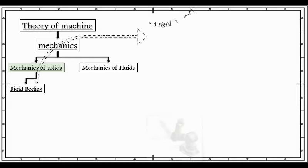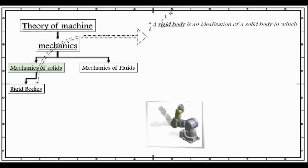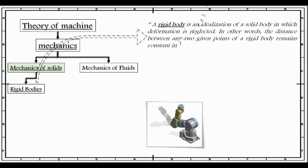A rigid body is an idealization of a solid body in which deformation is neglected. In other words, the distance between any two given points of a rigid body remains constant in time regardless of external forces exerted on it.